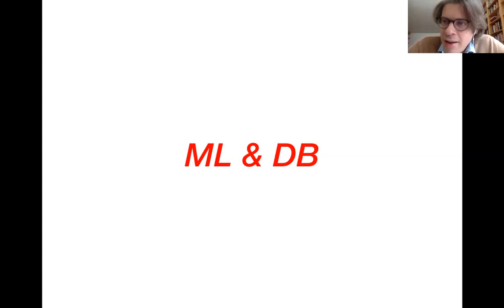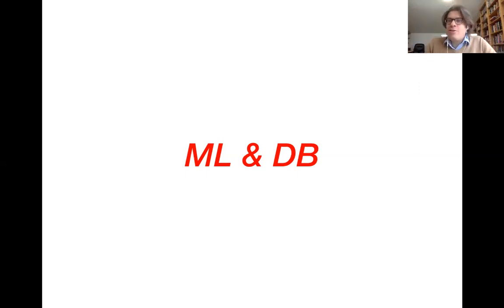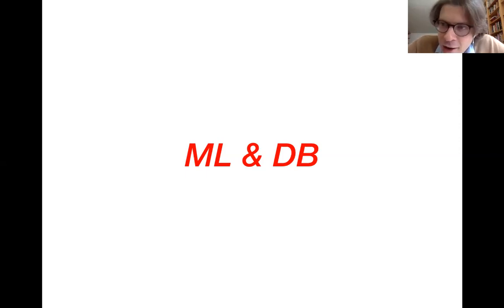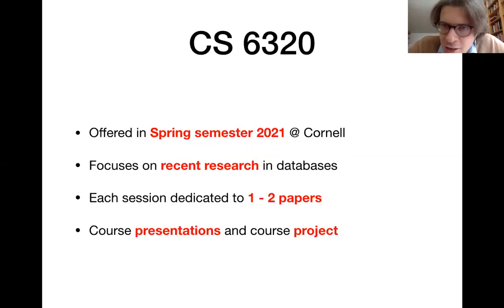There is also a lot of work connecting machine learning and databases. One direction is using machine learning to replace or complement query optimizers, because query optimization is very hard. We have discussed the simplifying assumptions typically made — such as assuming data is perfectly uniform or that different predicates are uncorrelated — and often those assumptions turn out to be wrong. Machine learning may help predict execution costs or select better query plans, and there are already promising results in this direction. On the interface side, people are working on methods that translate natural language questions into SQL queries using machine learning, and there is currently a lot of interest in this direction.